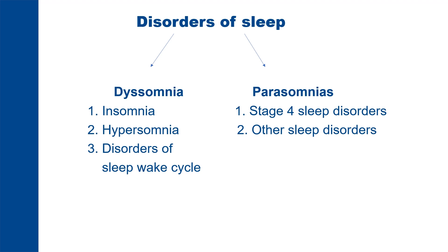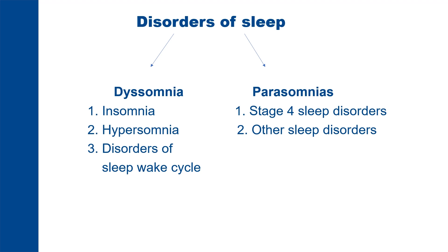How do we classify sleep disorders? Disorders of sleep are categorized broadly into disomnias and parasomnias. Disomnias are disturbances in the quality of sleep and are categorized into insomnias, hypersomnias, and disorders of the sleep-wake cycle. Parasomnias, on the other hand, are abnormal behaviors during sleep and are categorized into stage 4 sleep disorders and other sleep disorders.